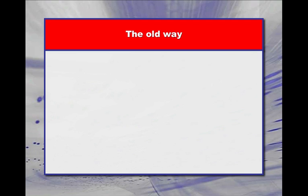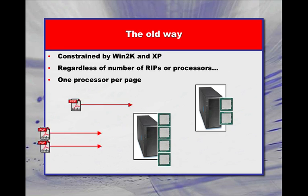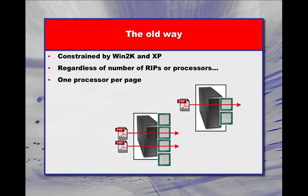To appreciate how things have changed in Rampage version 12, let's first take a look at the way it worked in the past. Up to and through version 11, Rampage was constrained by older operating systems. Whether one or two RIP applications were running on a workstation, and regardless of the number of processing cores on that workstation, there was a one-to-one-to-one relationship. What I mean by that is a single page uses a single RIP, and that single RIP uses a single processor.